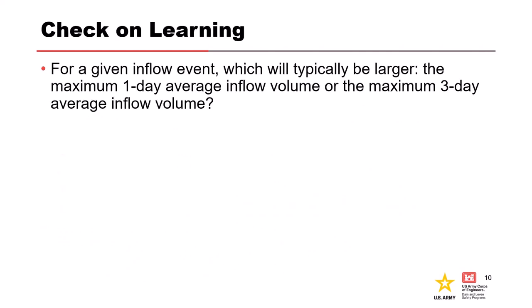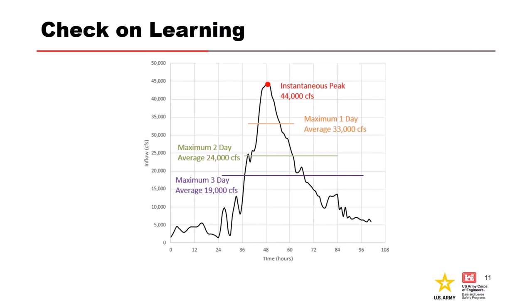Check on learning: for a given inflow event, which will typically be larger — the maximum one-day average inflow volume or the maximum three-day average inflow volume? The answer is the one-day. The maximum one-day average volume will typically be larger, as it is averaged over a shorter time frame at the highest part of the inflow hydrograph, whereas the three-day average is taken over a longer time frame which incorporates lower flows into that average.